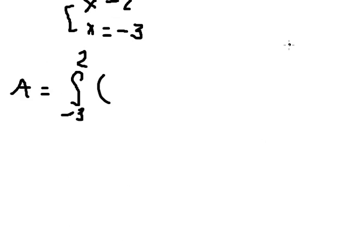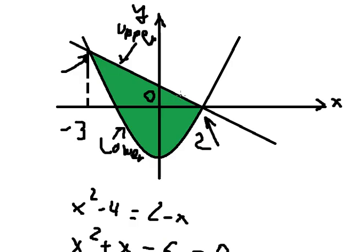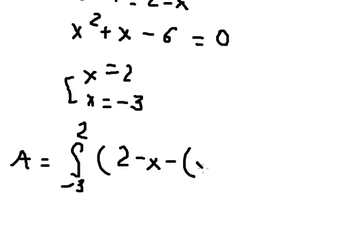So we have the upper function, that's 2 - x, and the lower function, that is x² - 4.